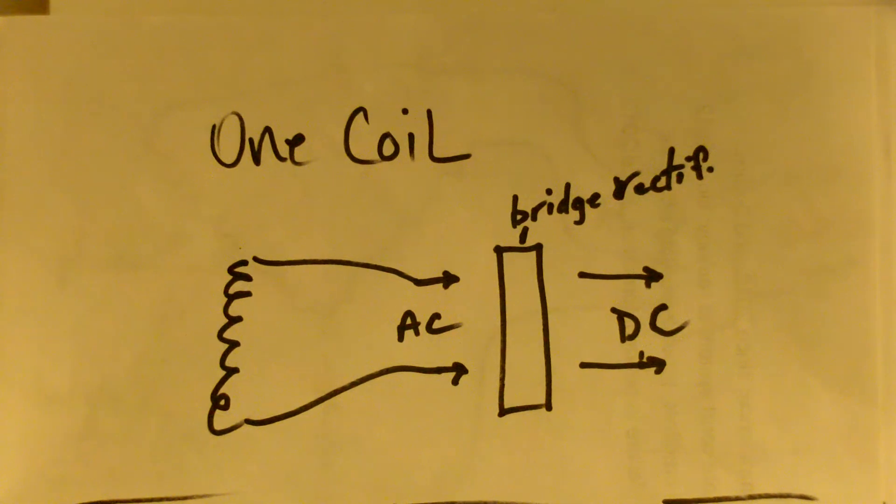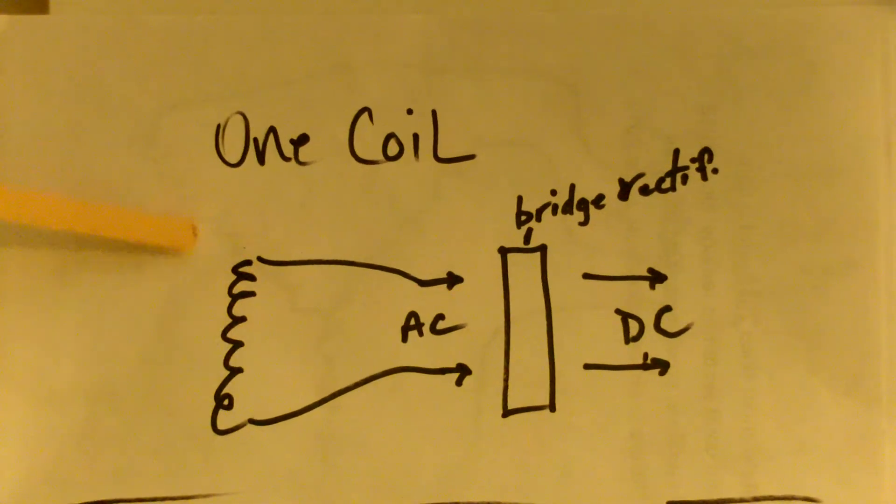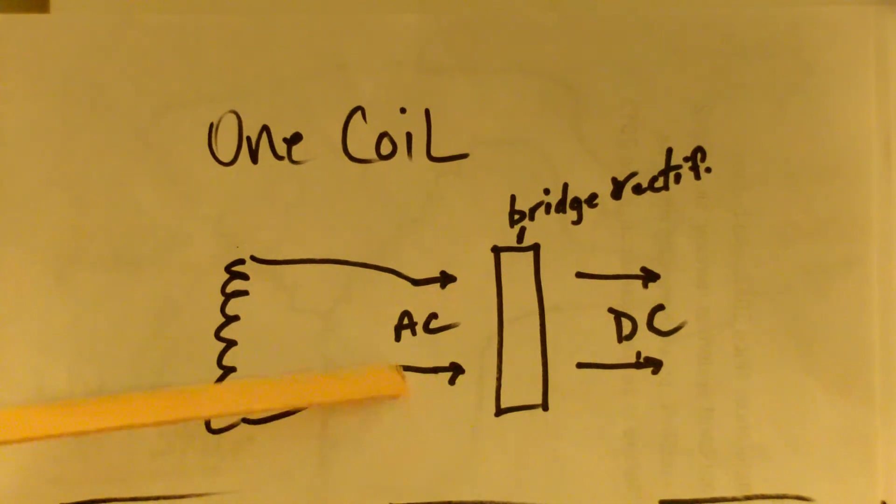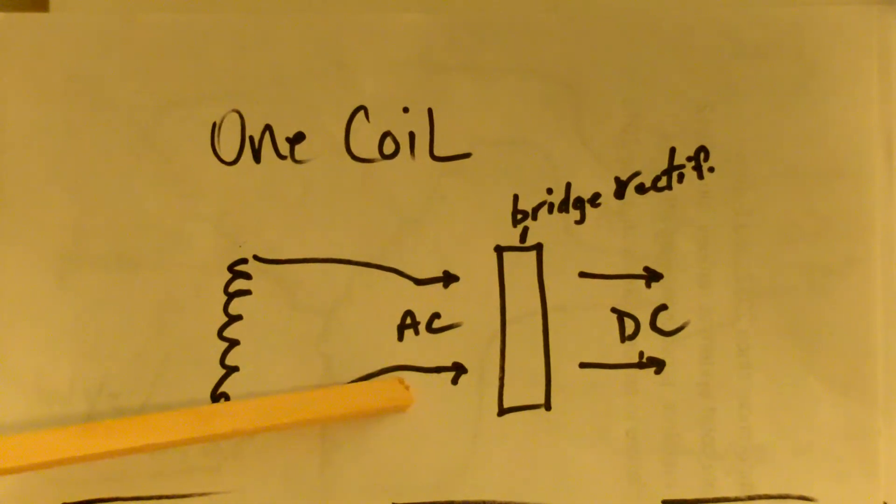The basics, which most people don't seem to know: one coil with a magnetic field going by it will produce some AC power. That AC power is not really usable, it's called wild AC.